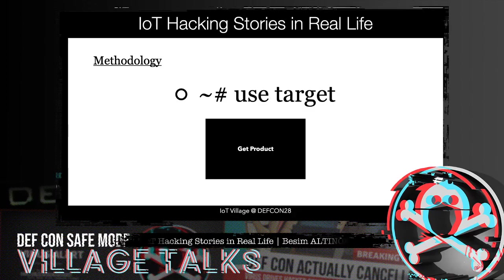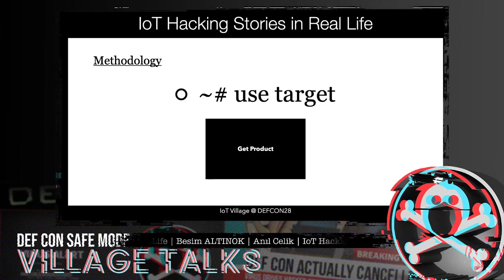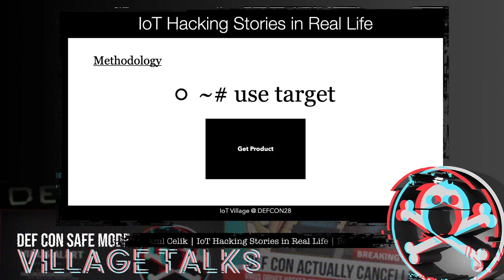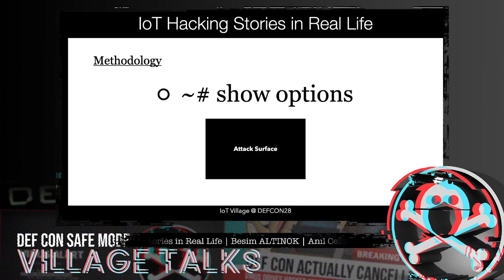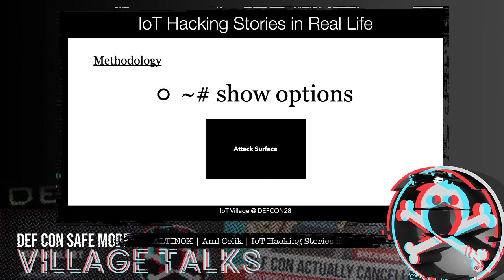After defining the target, the product must be supplied. There are several solutions for this: you can contact the manufacturer of the target product, you can contact the customer using the target product, or you can buy it. By using one of these methods, you can contact the manufacturer, developer, or customer to improve security. This is the most important step.